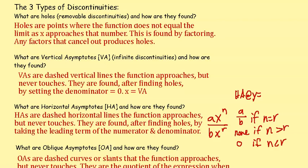The three types of discontinuities. What are holes, removable discontinuities, and how are they found? Holes are points where functions do not equal the limit as x approaches that number. They are found by factoring — any factors that cancel out produce holes.